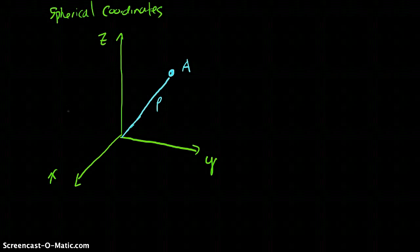And I'm going to say that this angle is phi between the positive z-axis and rho. And I'm going to say that theta is the angle that you wrap around z.